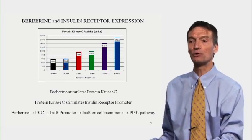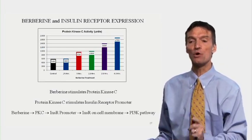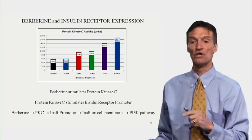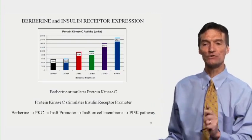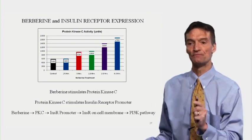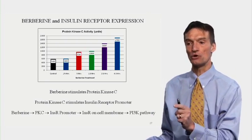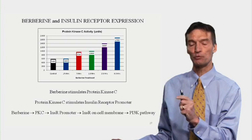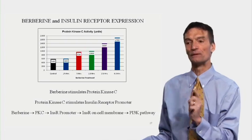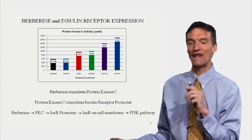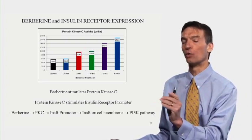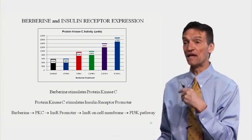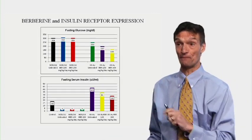Berberine stimulates protein kinase C, which stimulates the insulin receptor promoter. The pathway is: berberine → protein kinase C → insulin receptor promoter. We transcribe the messenger RNA, translate it into protein, put it on the cell membrane, activate the insulin receptor, activate the PI3K pathway, and improve insulin signaling.